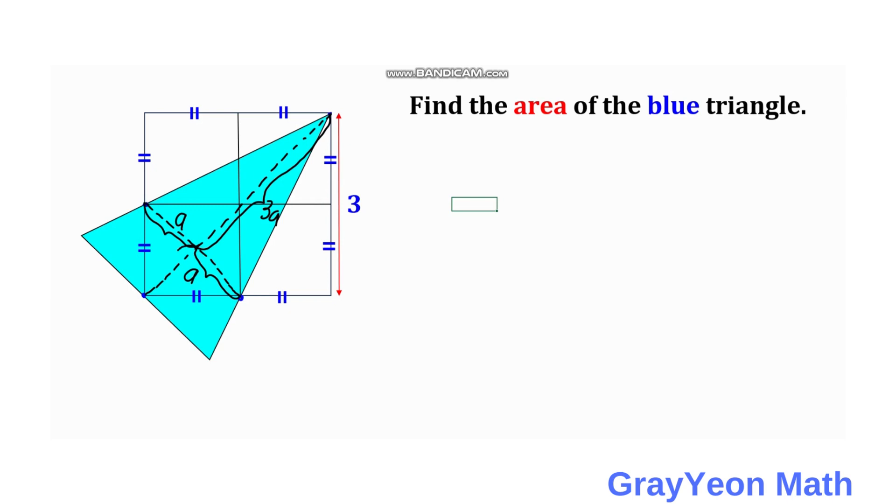And this length should be also a. Okay, so next is we try to find this length, because if we find that length then it will be easy to calculate the area of this triangle: one half times the base times the height.